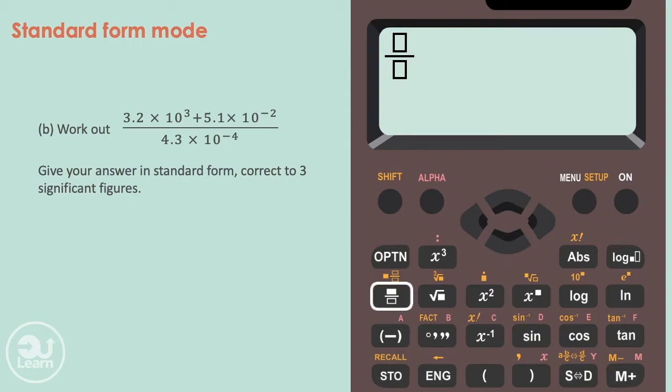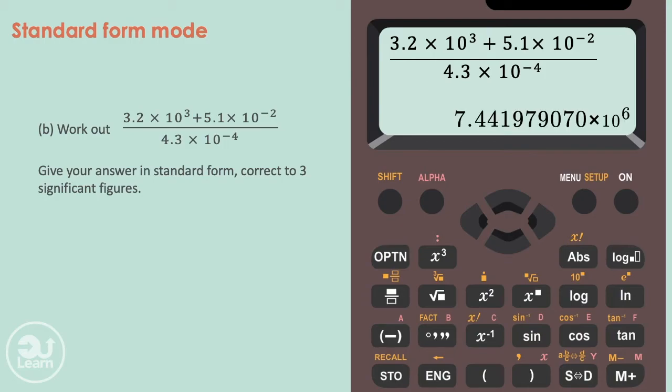Let's type in this calculation into our calculator using the fraction button. Since our calculator is still programmed to give answers in standard form, we get our answer looking like this. The final answer, correct to 3 significant figures, is 7.44 times 10 to the power of 6.